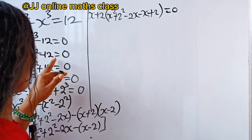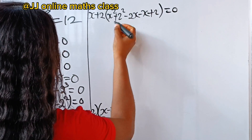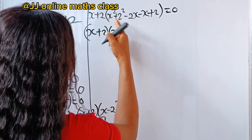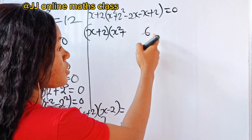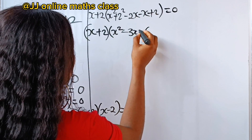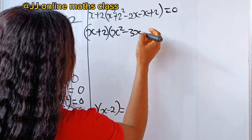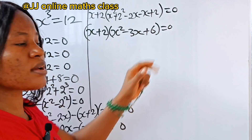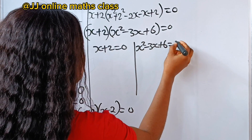All these are equal to 0 — remember our equation is equal to 0. Inside the brackets we have x squared plus 4, and combining minus 2x minus x gives minus 3x, so we have x squared minus 3x plus 6 equal to 0. That means x plus 2 is equal to 0, and x squared minus 3x plus 6 is also equal to 0.